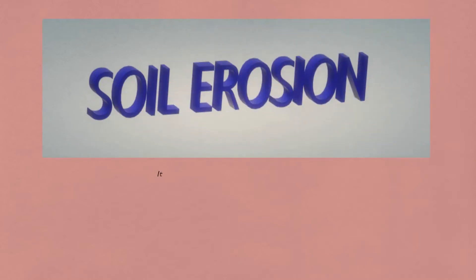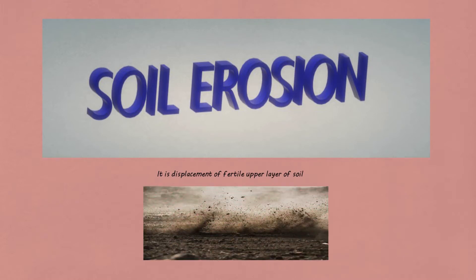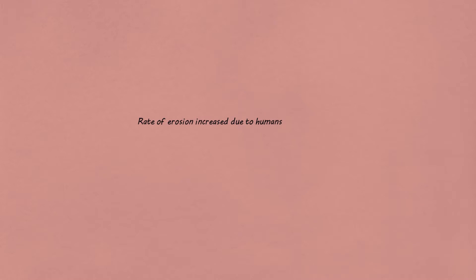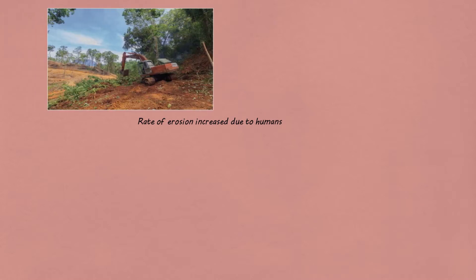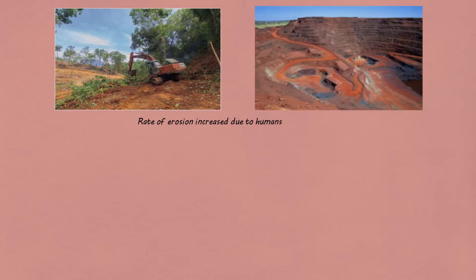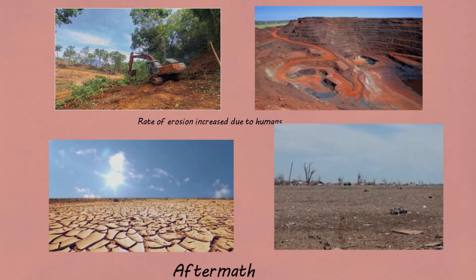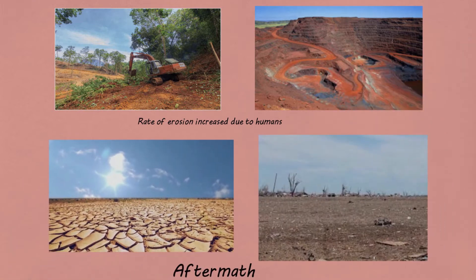Soil erosion. It is a form of soil degradation. It is a slow process. Human activities have increased the rate of erosion by 10 times. This is the effect if the rate of soil erosion increases drastically.